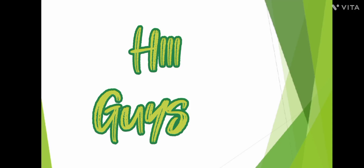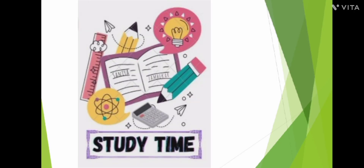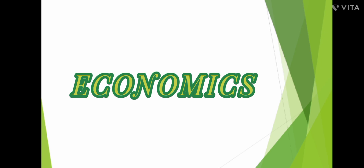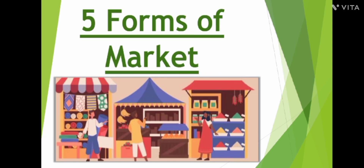Hi guys, welcome back to the channel Study Time. Today we are going to start with a new chapter of economics — Chapter Number Five: Forms of Market. A market is a place where buying and selling of goods take place.